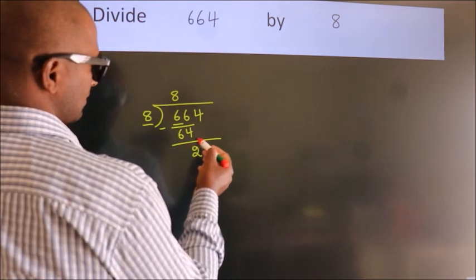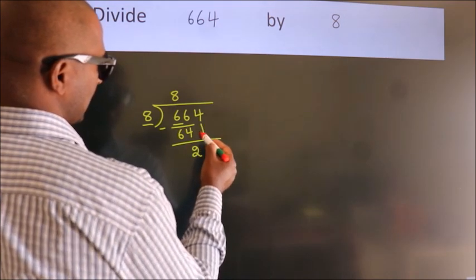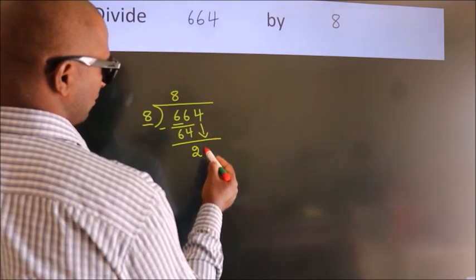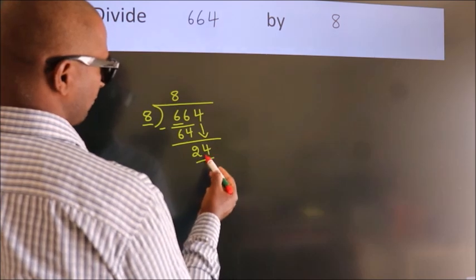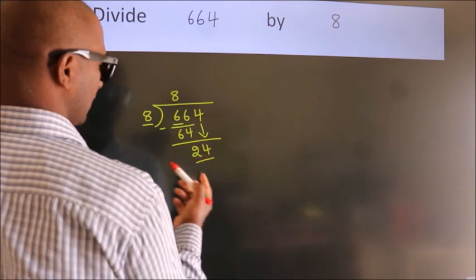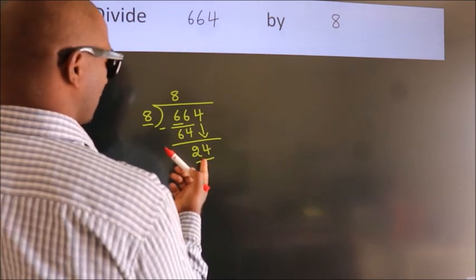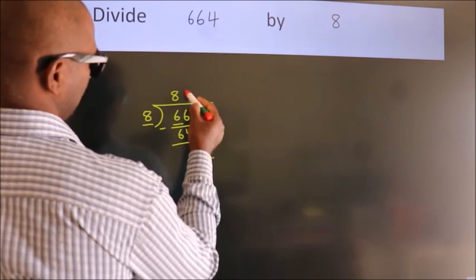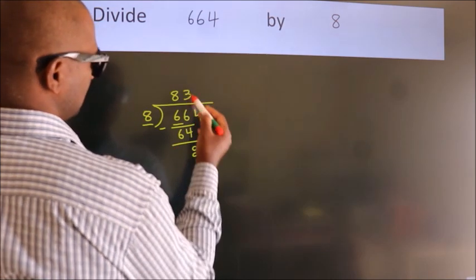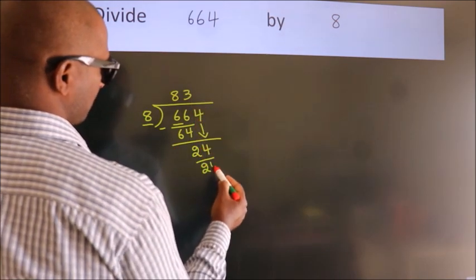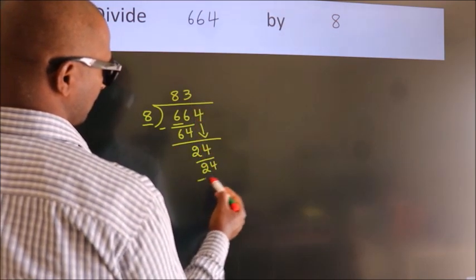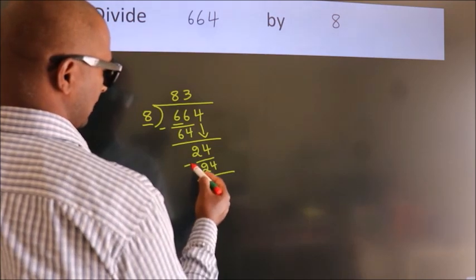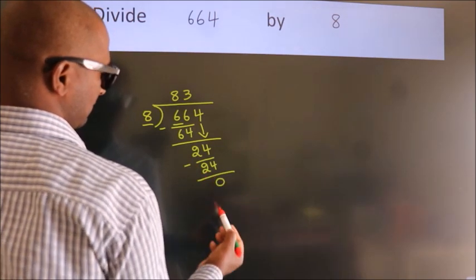After this, bring down the beside number. So 4 comes down, giving us 24. When do we get 24 in the 8 times table? 8 × 3 is 24. Now we subtract and we get 0.